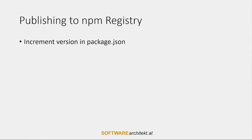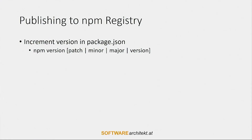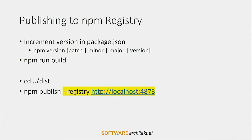After this you can publish everything to your registry. You have to increment the version in your package.json, which can be done using npm version patch — which increments the patch version — or minor to increment the minor version, or major for the major version. You can even provide a specific version like 1.3, and that version will be written into the package.json. After this you build your application, then move to the distribution folder and publish everything. If you have an internal registry, you can point to it with the --registry flag.